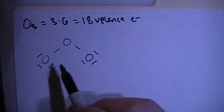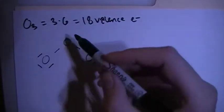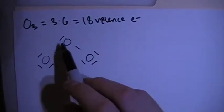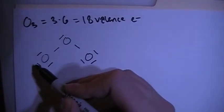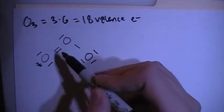So if you notice, here's 8, 16, and we still need 2 more for 18, so we could just throw that one on there. Now, this oxygen only has 6, does not complete the octet rule, so what we need to do is move one of these pairs of this oxygen of electrons over to make a double bond.